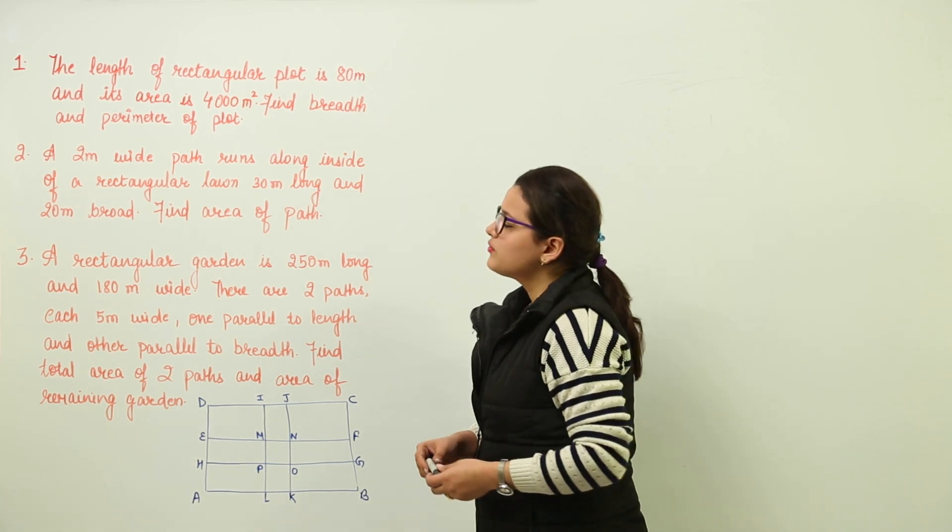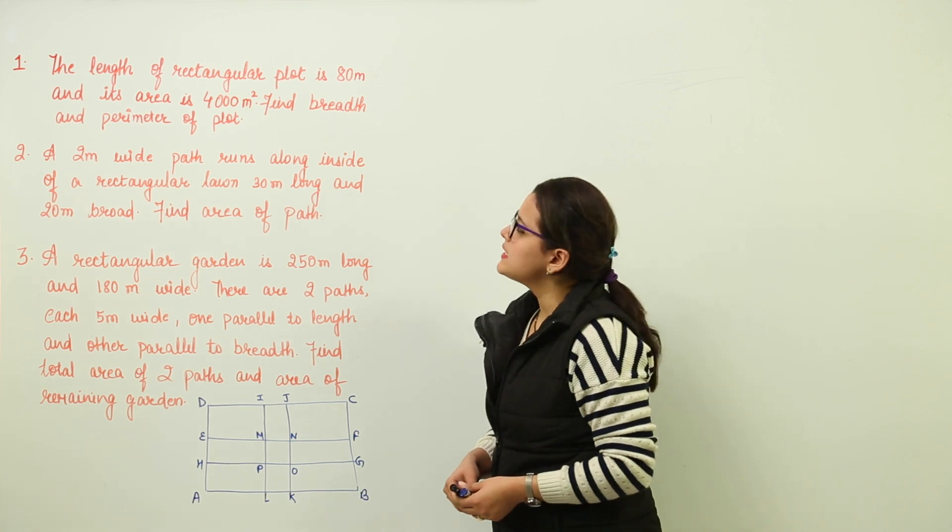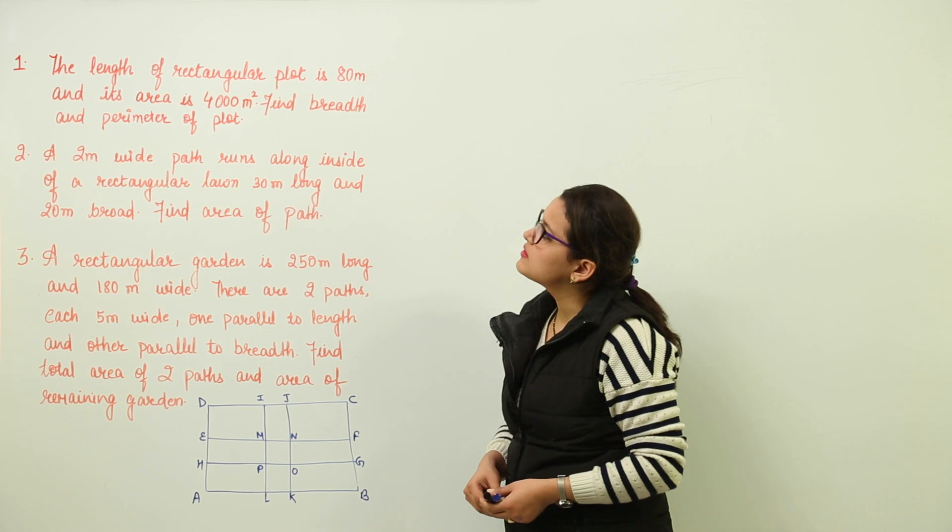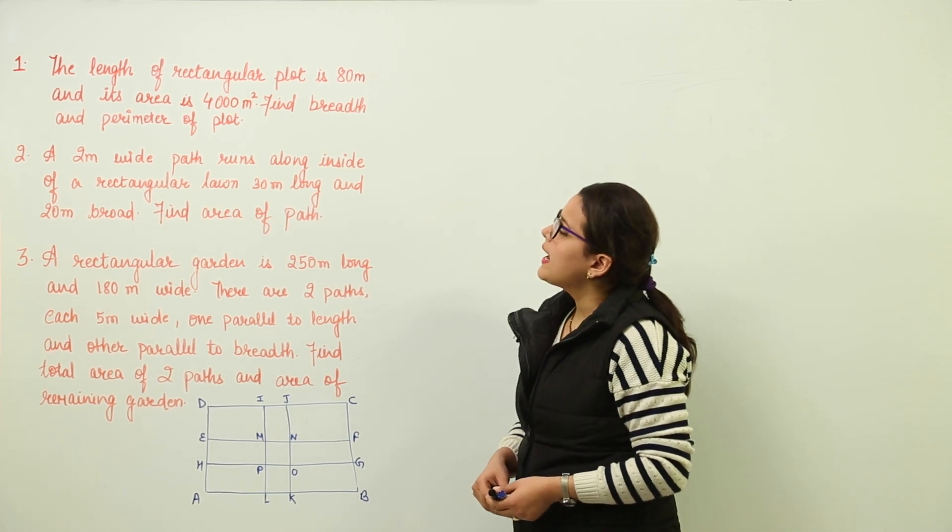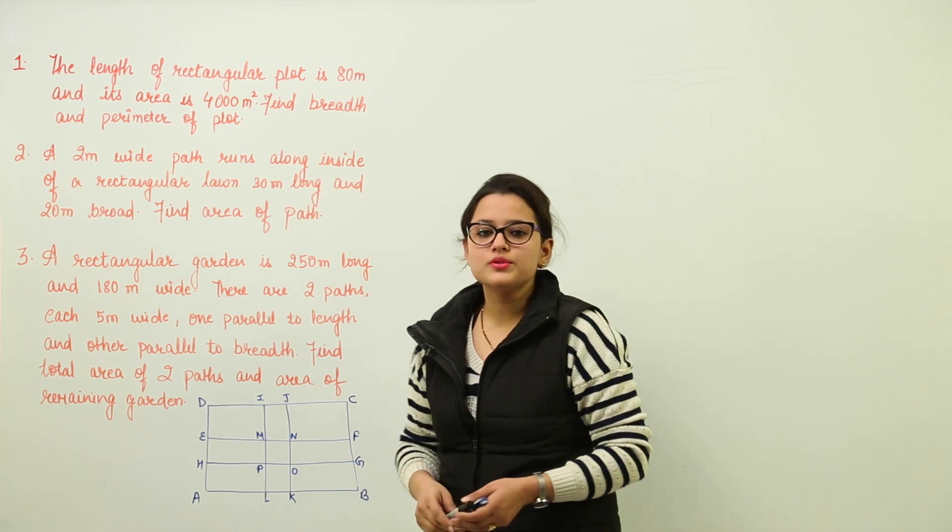Let's solve some questions. The first one is that the length of rectangular plot is given as 80 meters, its area has been given to us as 4000 meter square, and the breadth and perimeter are to be found. So how to do such questions?